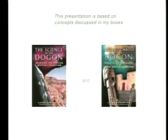My discussion today is based on concepts expressed more fully in my two books, The Science of the Dogon and Sacred Symbols of the Dogon, both of which are available in the CPAC bookstore. The second book is available for the first time today, thanks to a Herculean effort on the part of the publisher and the CPAC people to get the books here. They had to be shipped directly from the printer to CPAC to be here on time — I actually saw the book for the first time this morning.